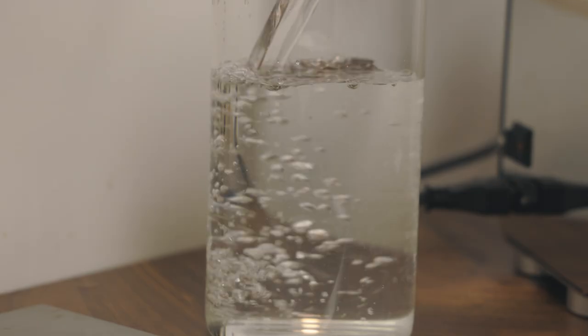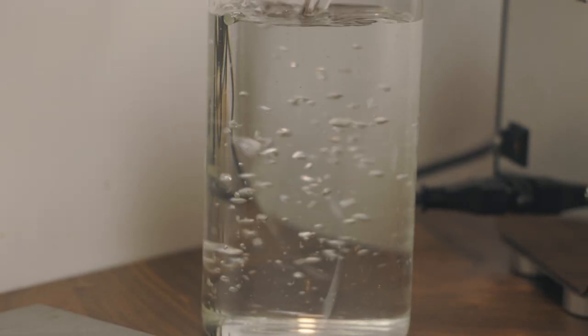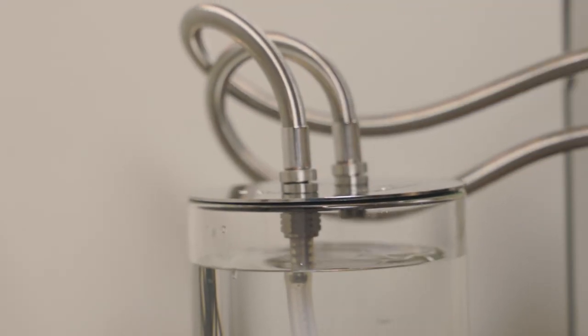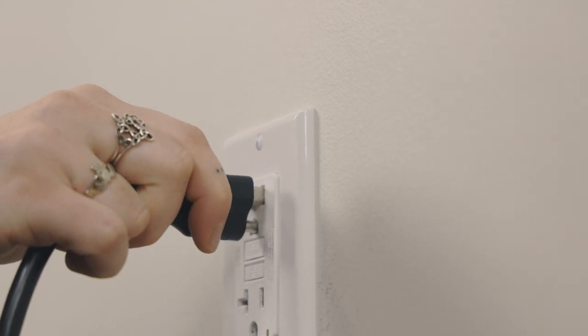At this time, fill the water tank with your filtered softened water. Place the lid with the silicone hoses on the water tank. Plug in the machine and turn it on.